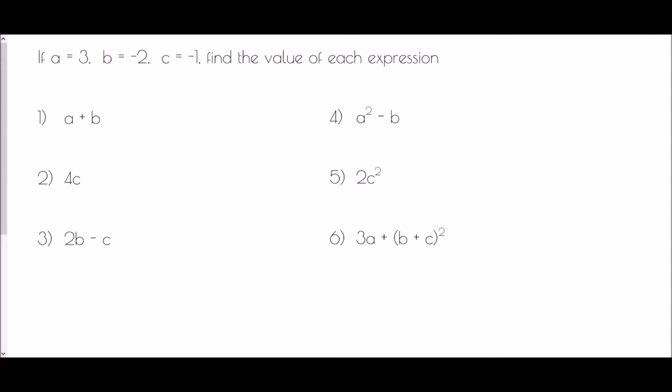In our next set of examples, we'll see what effect negative values have. Here a is 3, b is negative 2, and c is negative 1. In a plus b, I replace a with 3 and b with negative 2. When adding a negative value, that is exactly the same as subtracting, so 3 take away 2 is 1.